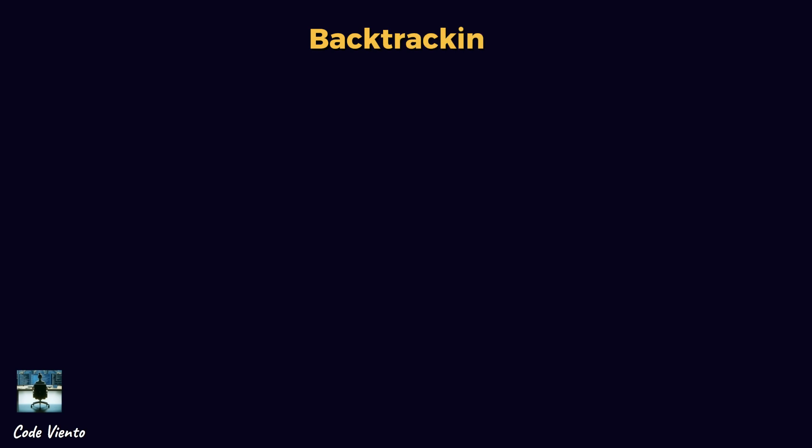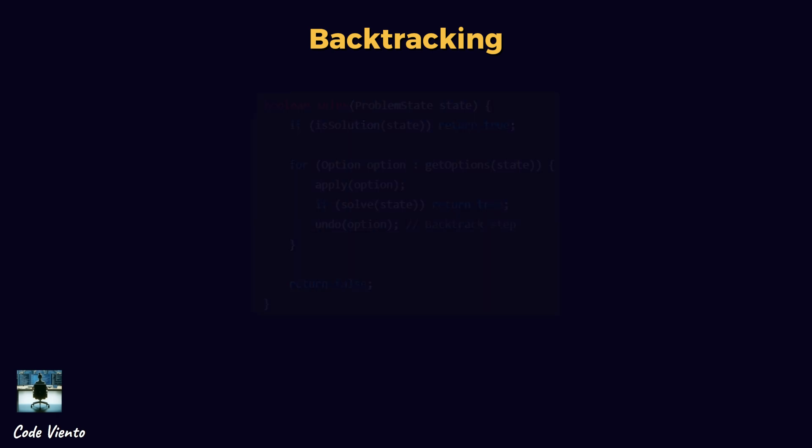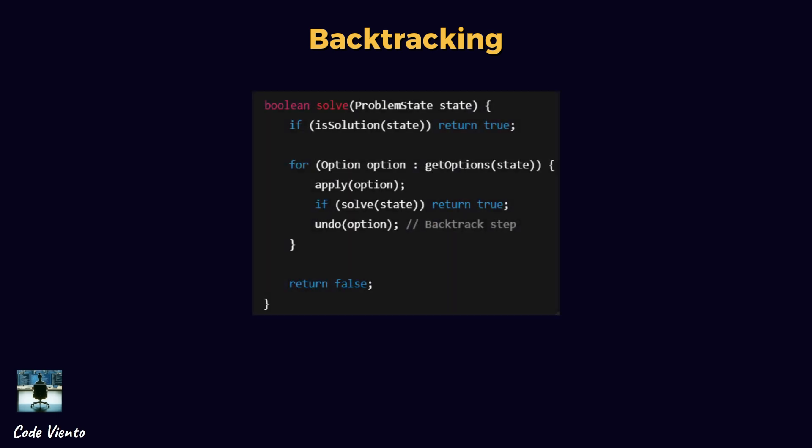Backtracking is like solving a puzzle by trial and error. You make a move, and if it doesn't work, you undo it and try another option. It's used in problems where you need to explore multiple possibilities and find the correct one or all valid ones. Start from an initial state, make a move and check if it's valid. If it's valid, move forward. If not, backtrack (undo the move).